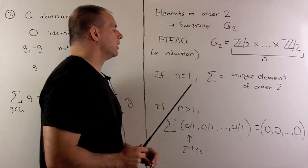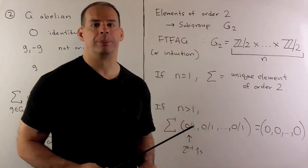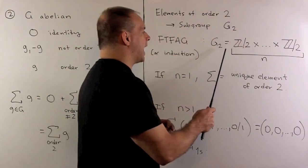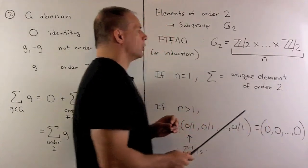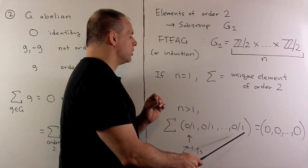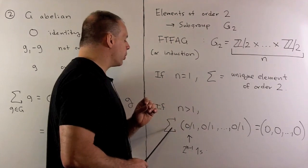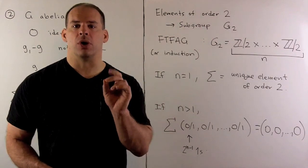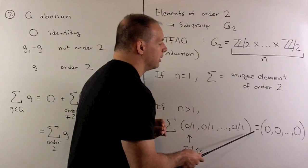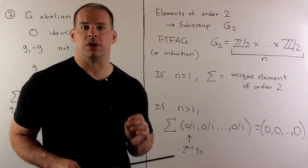Now, two possibilities. If there's only one factor, then if I take the sum over all these elements, we're just going to be left with the unique element of order 2 — that's our first case. If we have more than one factor, we're going to add up all the elements in this product group. We're adding all tuples of 1s and 0s. The number of ways I could put a 1 in the first coordinate is 2 to the N minus 1, so when we add up all elements we get 2 to the N minus 1, which goes to 0. We do that for each coordinate, and the sum over all elements of order 2 equals the 0 tuple, which is the identity element. So in our original G, we get 0 — and that's our second case.